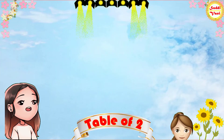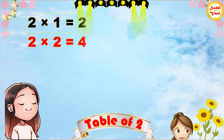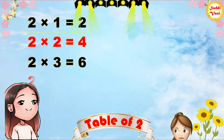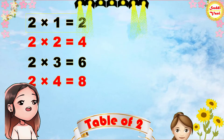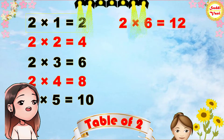Once again: 2 1s are 2, 2 2s are 4, 2 3s are 6, 2 4s are 8, 2 5s are 10, 2 6s are 12.